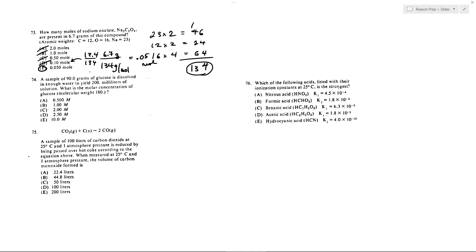74. 90 grams of glucose is dissolved in enough water to yield 200 mils of solution. What is the concentration of glucose? Well, we know its molecular weight is 180.